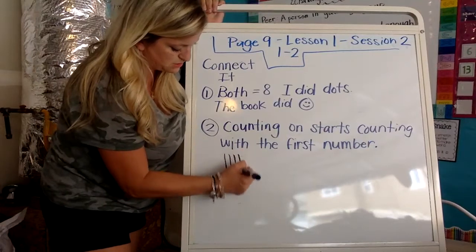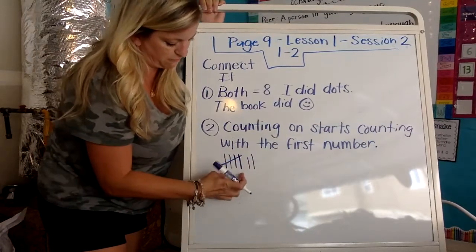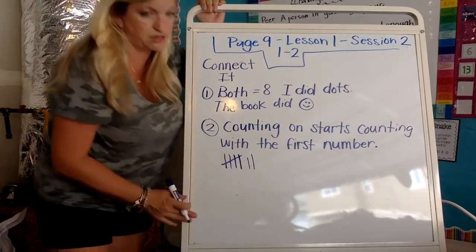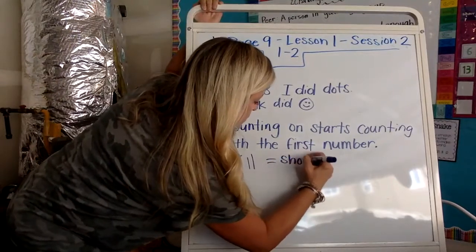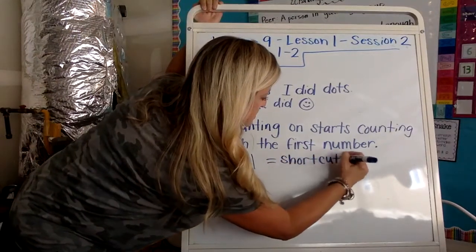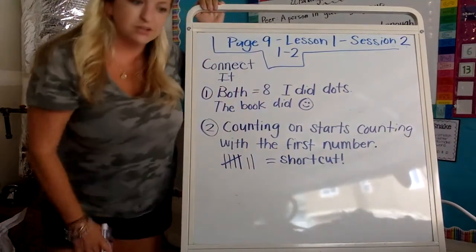Like my tally marks. I'm not going to count seven of these. I'm going to count five, six, seven. So it's a, you could also say it is equal to a shortcut. Work smarter, not harder.